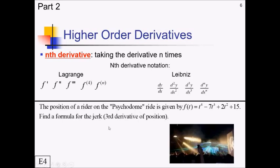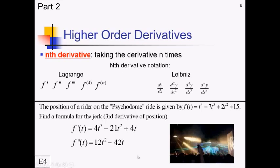Now let's find the third derivative of position for this function. Starting with the first derivative f′(t): that's 4t³ minus 21t² plus 4t — the constant 15 differentiates away. The second derivative is 12t² minus 42t plus 4. And the third derivative, f‴(t), is 24t minus 42. And we're done.